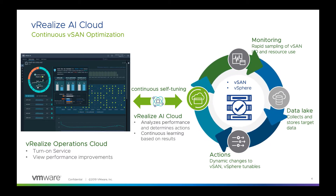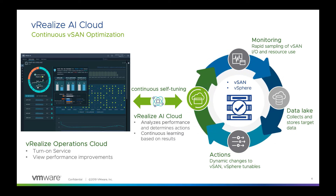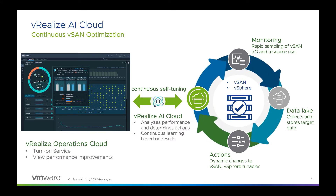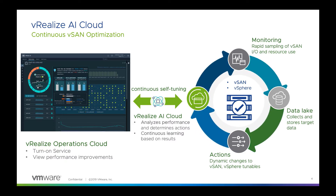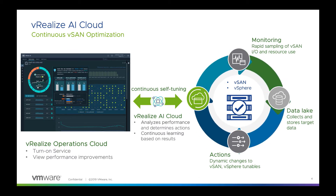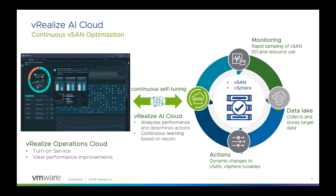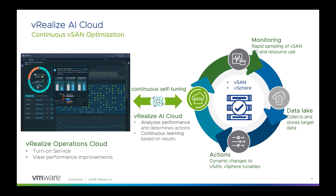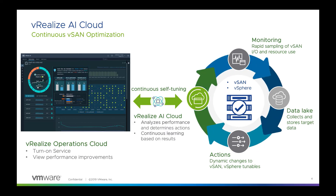vRealize AI cloud analyzes how your performance is running and determines what action to take to improve your application performance and vSAN clusters. There are guard rules in place — if it can't improve a particular condition or your vSAN clusters, it won't do anything at all. Using reinforcement learning, it looks for the largest reward mechanism, which can be based on the best read and write throughput or the lowest network latency of your infrastructure.